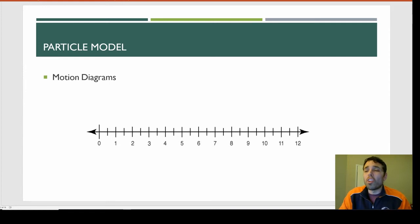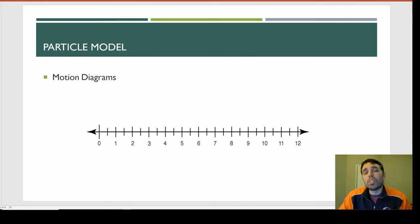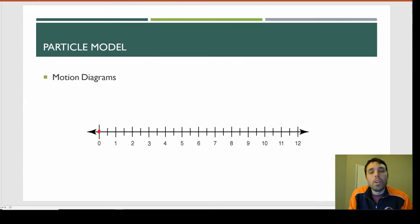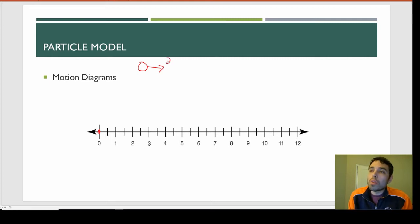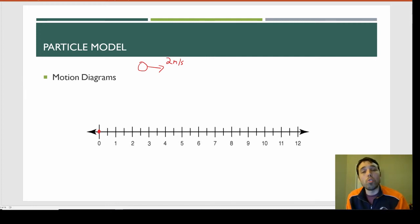A motion diagram is basically a long line with numbers along it that represent distance, usually in meters. What we're going to do is place a dot that represents our object at certain time intervals. In this example, we're going to make a dot every one second. So let's say we're going to play catch with our friend — we're going to throw a ball at a speed of two meters per second.